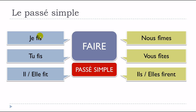One more time: je fis — final S not pronounced. Tu fis — same. Il fit, elle fit — final T not pronounced. Nous fîmes — S not pronounced. Vous fîtes — S not pronounced. Ils firent, elles firent — the ENT ending for the plural is not pronounced. So: je fis, tu fis, il fit, elle fit, nous fîmes, vous fîtes, ils firent, elles firent. You've got all the forms for the passé simple of the verb faire.